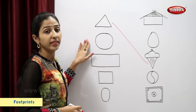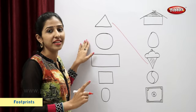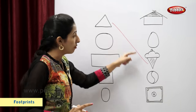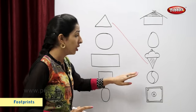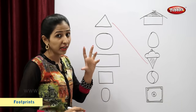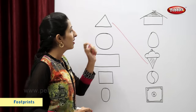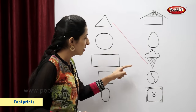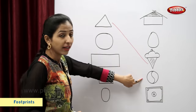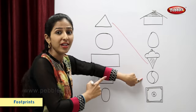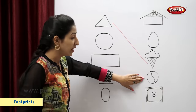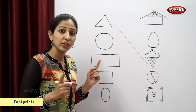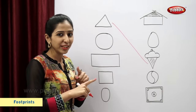This is a circle. Now you tell me which figure looks like a circle? Ball. This ball looks like a circle. So let's match.